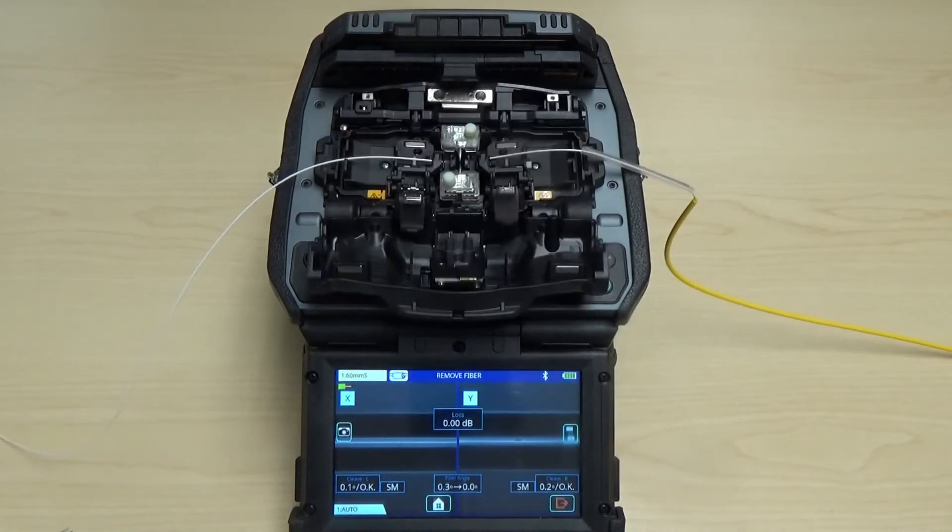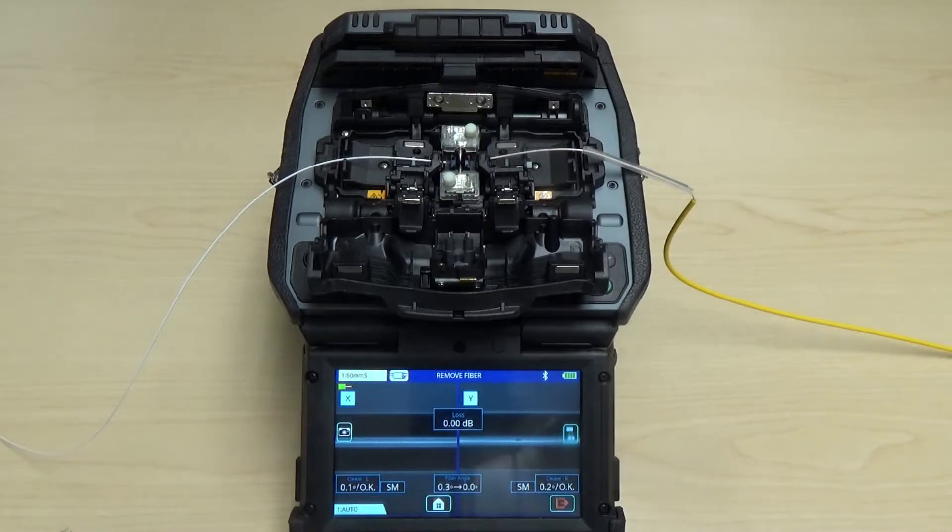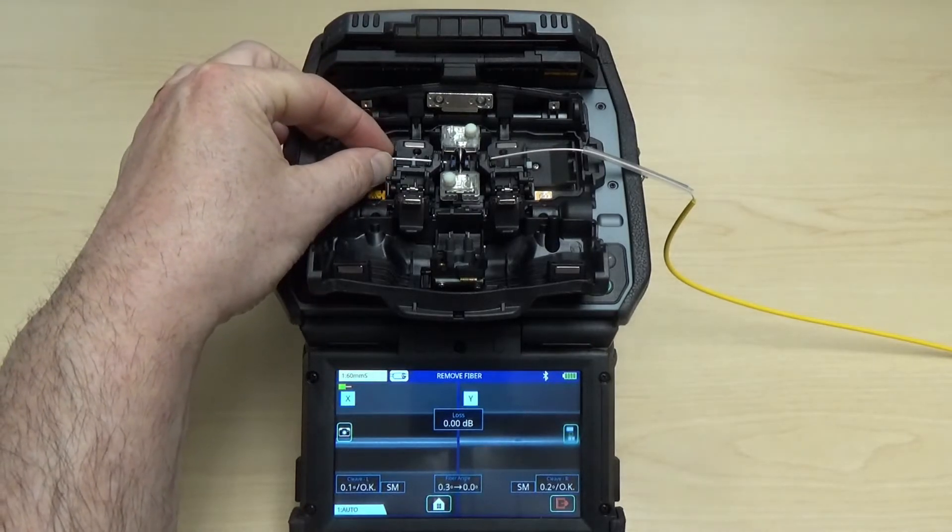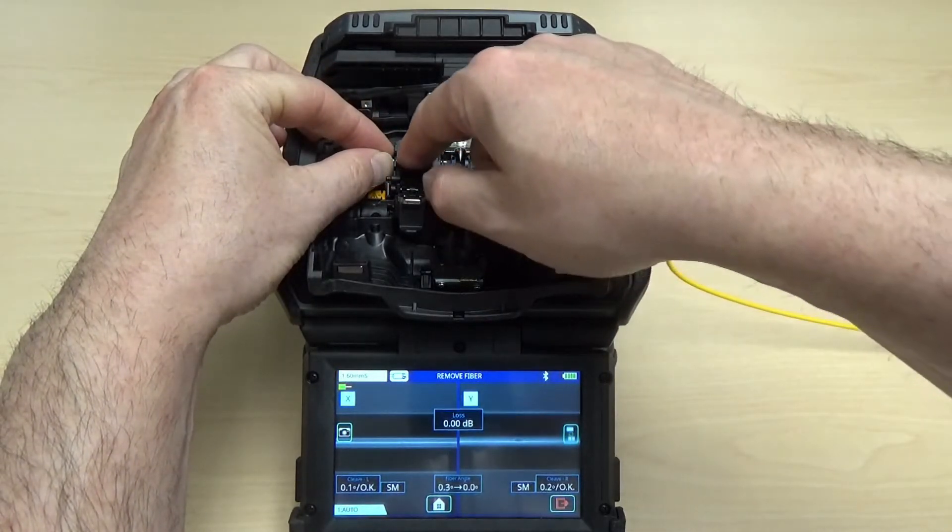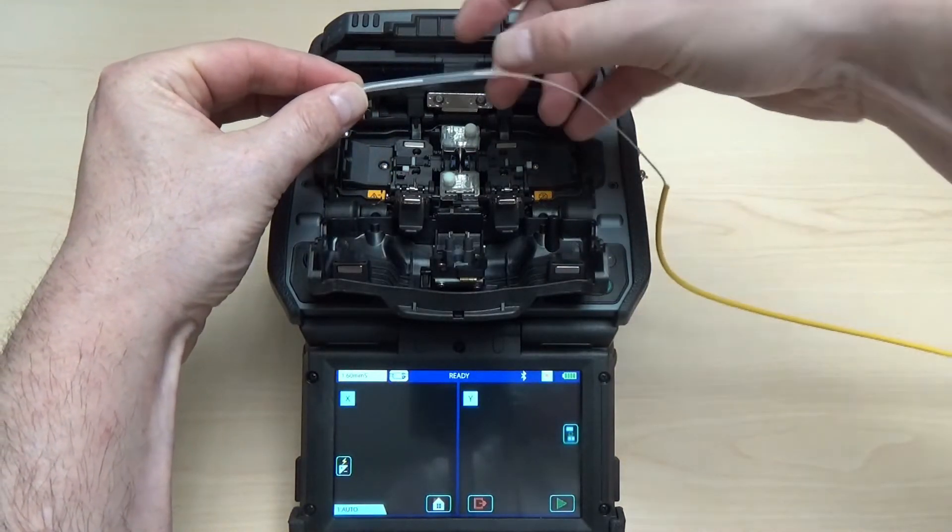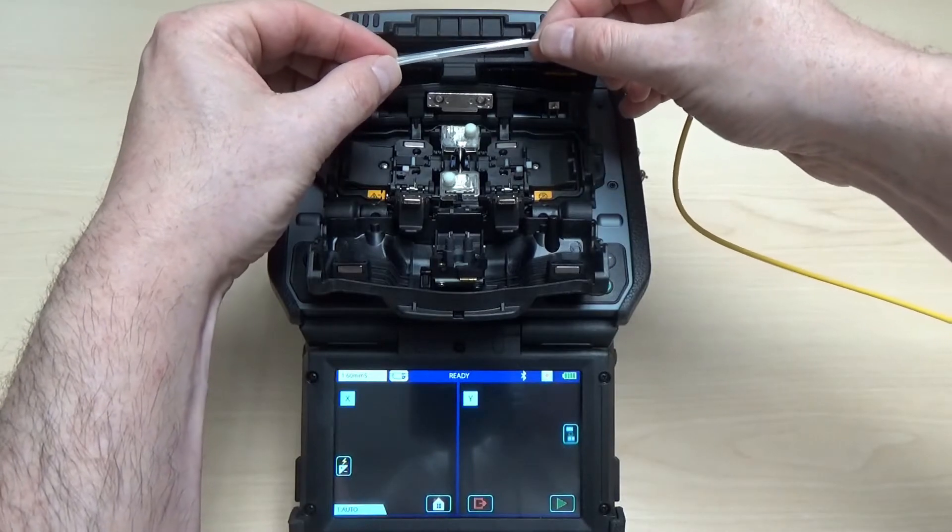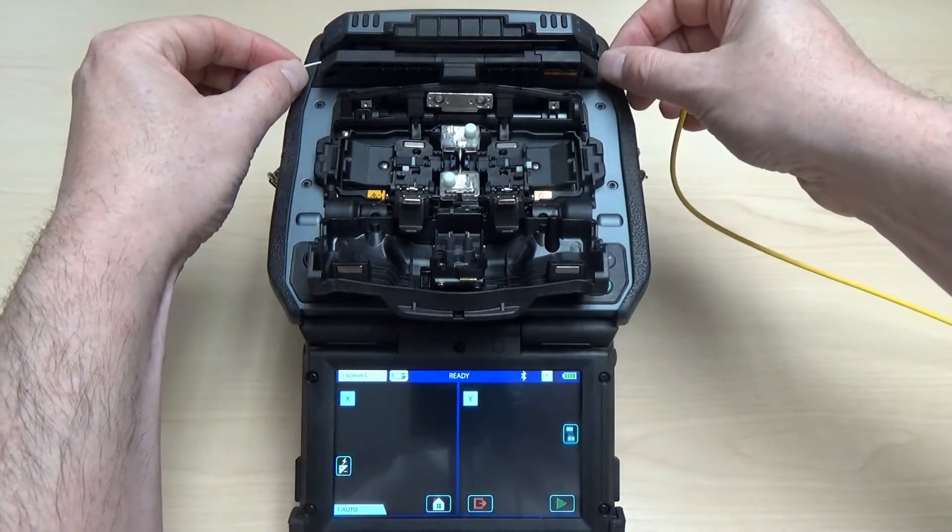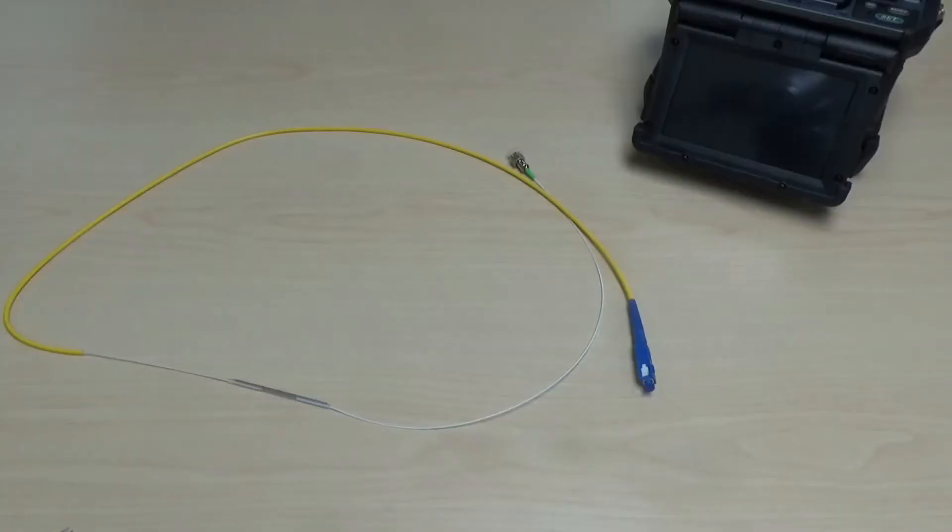And now we see a nice result. So we're going to remove those fibers by lifting those two clamp arms, and that will free up the fiber. We'll slide our protective sleeve over the gap, place it into the oven for shrinkage, and here is the finished product.